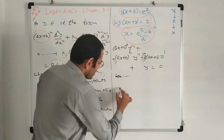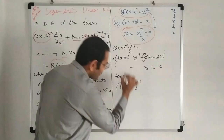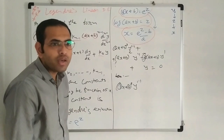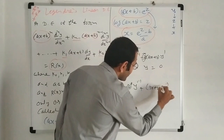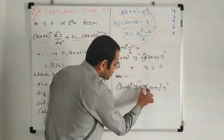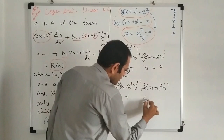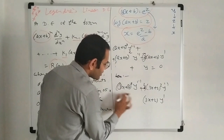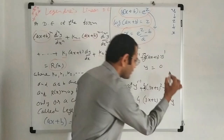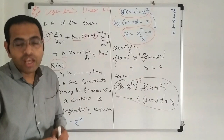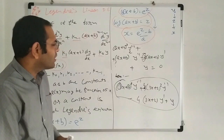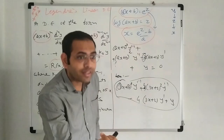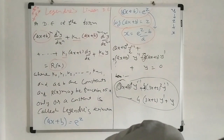Suppose (3X + 2) Y double dash — then we require the whole square, with any sign (positive or negative) and any constant. Plus (3X + 2) into Y dash, with negative sign or constant, plus Y. This type of differential equation we can say is a Legendré Linear Equation. However many times differentiation is present, that many times we require the (AX + B) term of corresponding power.